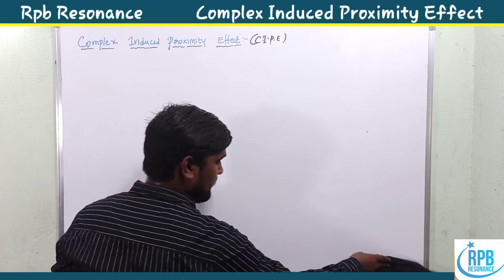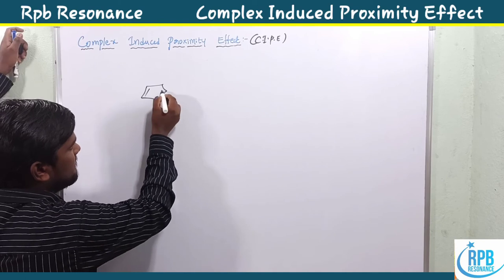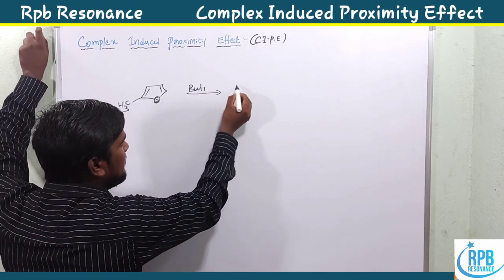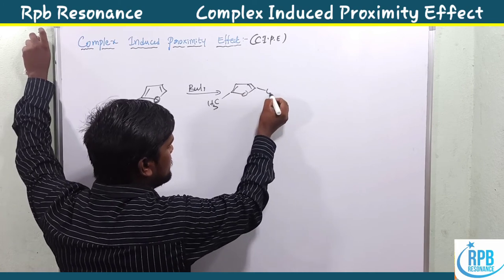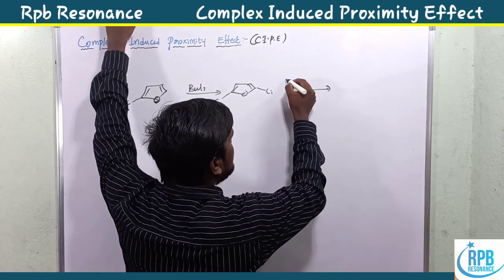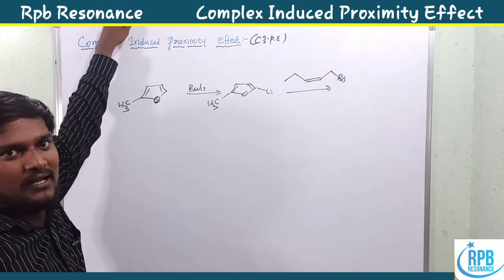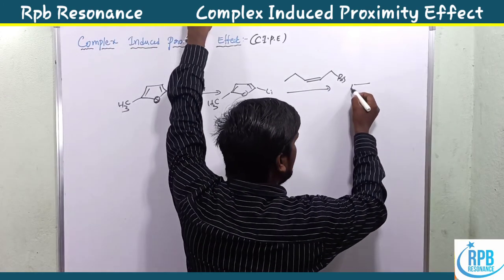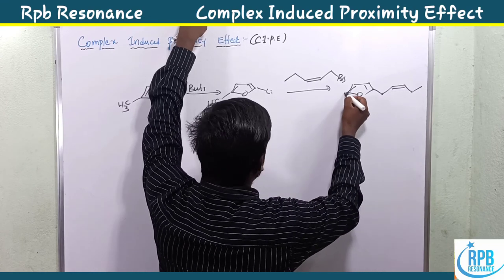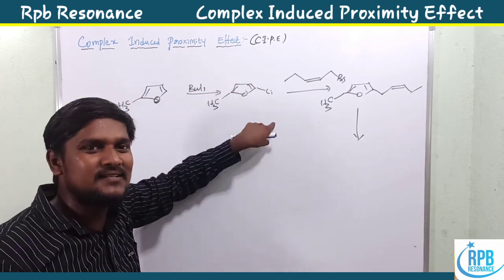Before going to the metal-halogen exchange process, here is a simple example. We have a heteroaromatic compound — 2-methylfuran, which has an oxygen-containing ring with a methyl group at the second position. When we use n-butyl lithium, lithiation takes place at the fifth position — the ortho position relative to the substituent.